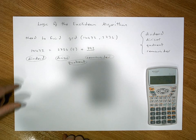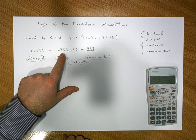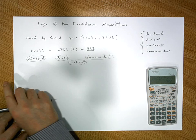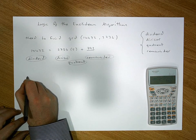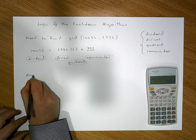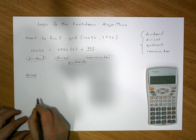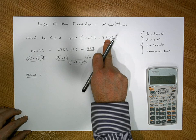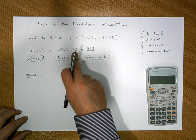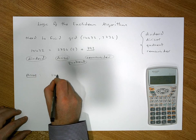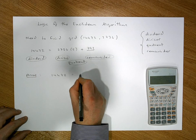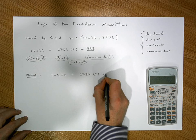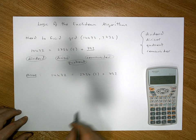Phase one: the smaller number divides into the larger number five times, so we know that 14472 equals 2736 times 5 plus 792 — that's the remainder. Then we take the divisor and ask how many times does the remainder divide into the divisor. So 2736 divided by 792 goes in three whole times with a remainder.